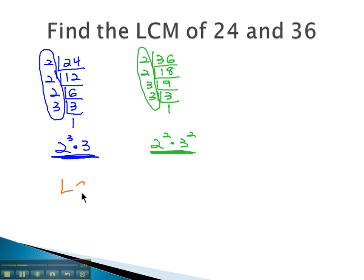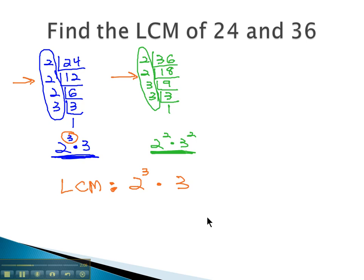We now can identify the least common multiple of both numbers by using all the factors that showed up. As we were dividing, the factors that showed up were 2's and 3's. We will then attach to the 2 the highest exponent that shows up on a 2. We have 2 cubed and 2 squared — the highest exponent is 3, so that's the exponent we attach. We then look at the 3's, and the highest exponent we see on a 3 is squared.